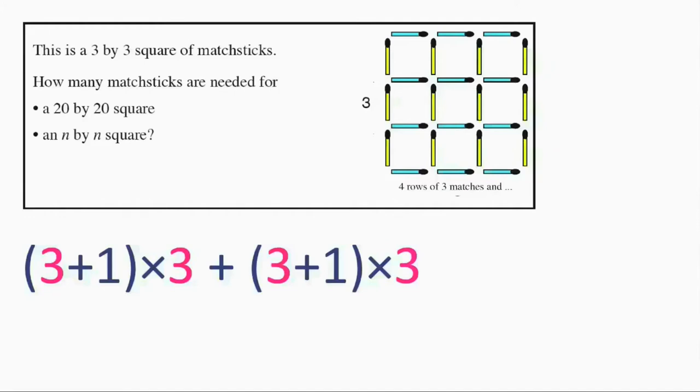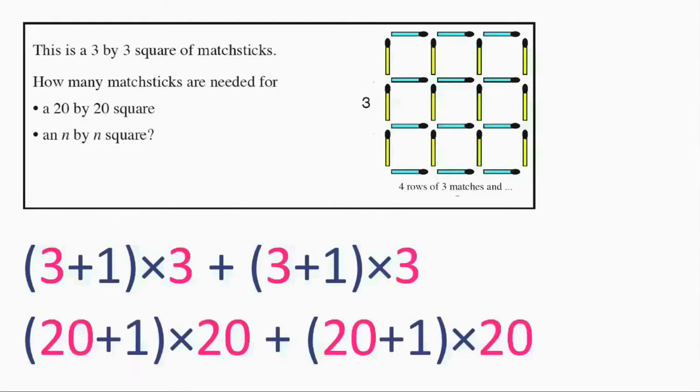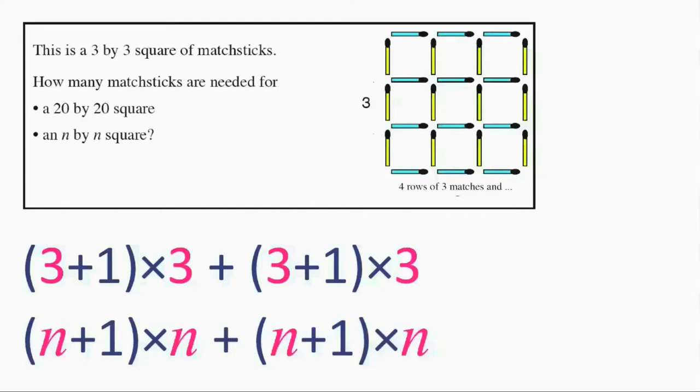So if we had, say, a 20 by 20 matchstick square, the number of matchsticks would be this. And for an n by n square, the number would be this, or this.